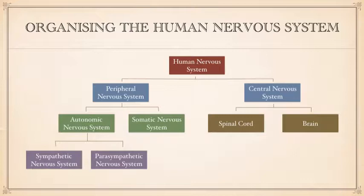As you can see here, the nervous system has actually got a lot of subdivisions to it. You've got the nervous system as a whole, which is then split into the peripheral and central nervous system. The central nervous system is then split into the spinal cord and the brain, whereas the peripheral nervous system is further divided into the autonomic and somatic nervous system, and the autonomic nervous system is then further divided into the sympathetic and parasympathetic nervous system. It's important for you to know how the nervous system is broken down.